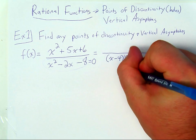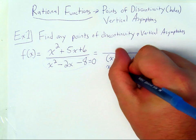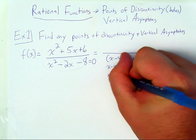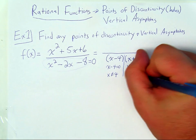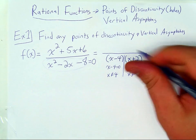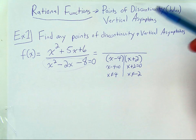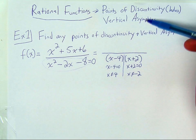So if I set each one of these equal to zero and solve, I'll find that x can equal four and that x can equal negative two. So those would be domain restrictions. Now that's going to lead to points of discontinuity and vertical asymptotes.